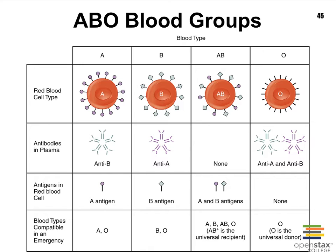In people who have blood type O, where they do not have any antigens attached to the red blood cells, we see that both antibodies — A and B — are present in the plasma.